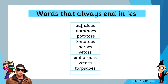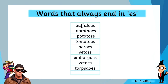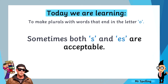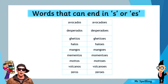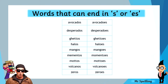We have buffaloes, dominoes, potatoes, tomatoes, heroes, vetoes, embargoes, and torpedoes. And sometimes you can add both S and ES to a word, and both versions of the word are acceptable. Words in this category include avocados, desperados, ghettos, halos, mangoes, mottos, volcanoes, and zeros.